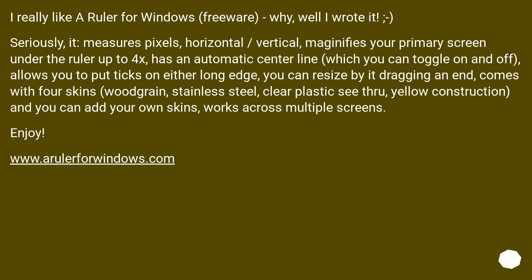I really like Ruler for Windows, freeware — well, I wrote it. It measures pixels, horizontal and vertical, magnifies your primary screen under the ruler up to 4x, has an automatic centerline which you can toggle on and off, and allows you to put ticks on either long edge. You can resize by dragging an end. It comes with 4 skins: wood grain, stainless steel, clear plastic see-through, yellow construction — and you can add your own skins. Works across multiple screens.